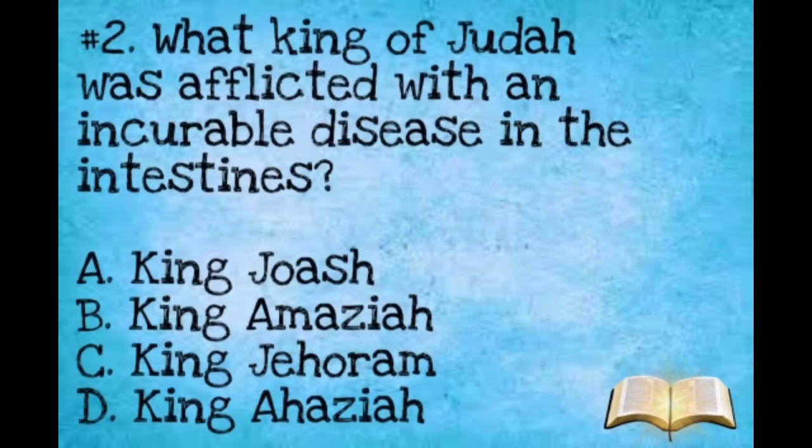Number two: What king of Judah was afflicted with an incurable disease in the intestines? A: King Joash. B: King Amaziah. C: King Jehoram.